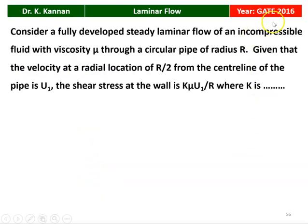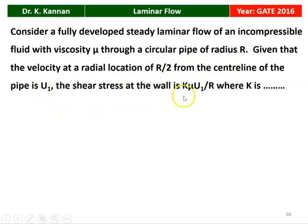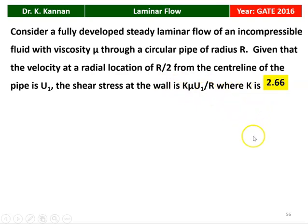The next question from the GATE 2016 question paper. Consider a fully developed steady laminar flow of an incompressible fluid with viscosity μ through a circular pipe of radius R. The velocity at a radial location R/2 from the centerline is U1. The shear stress at the wall is K μ U1 / R, where K is a constant. We have to find K. The answer is K equals 2.66.